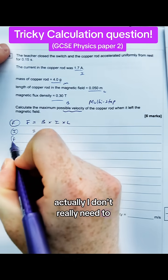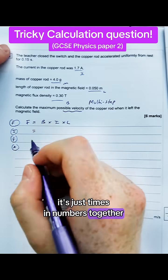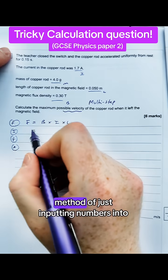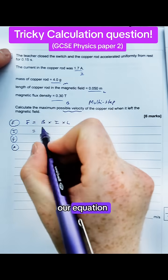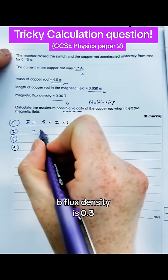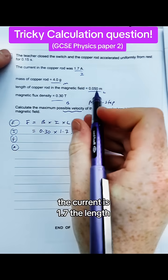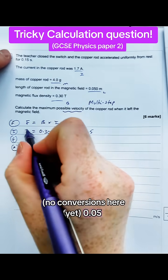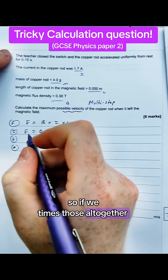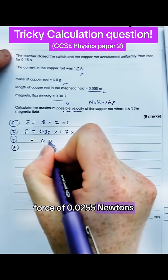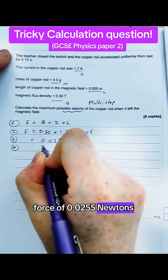So actually I don't really need to massively do FIFA here, it's just timesing numbers together, but we'll do it anyway. So method of just inputting numbers into our equation: B flux density is 0.3, the current is 1.7, the length is no conversions here yet 0.05. So if we times those all together we'll get a value for the force of 0.0255 Newtons.